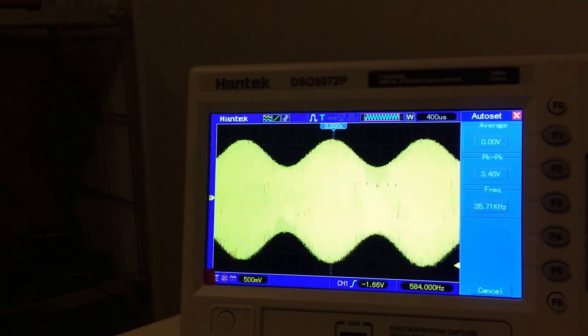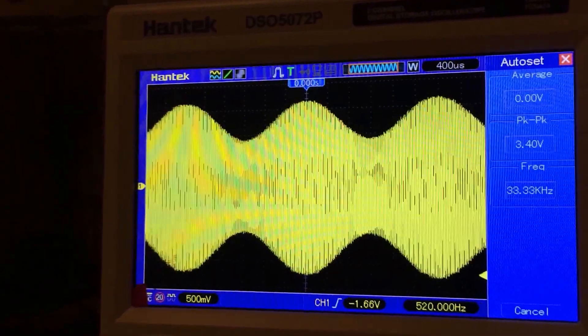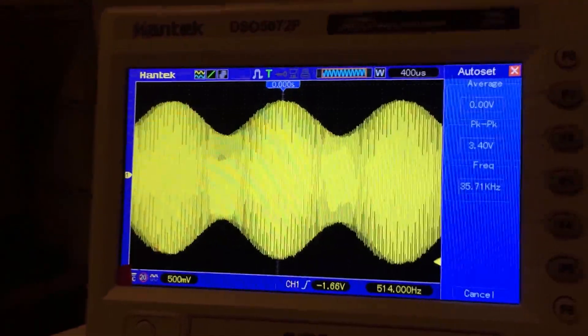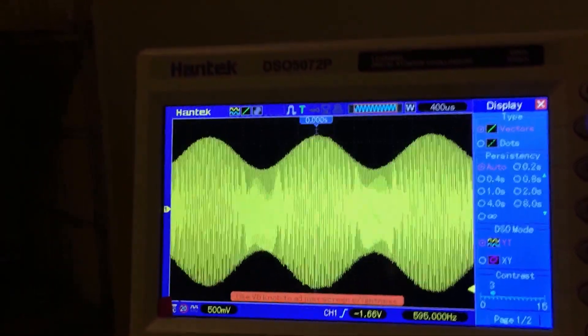But then what I noticed is the resolution is finite, and you really can't see the granularity of the waveform. It does look pretty cool on the screen as well as in the camera. But what I found was that if I hit the display button, I could change from vectors over to dots.